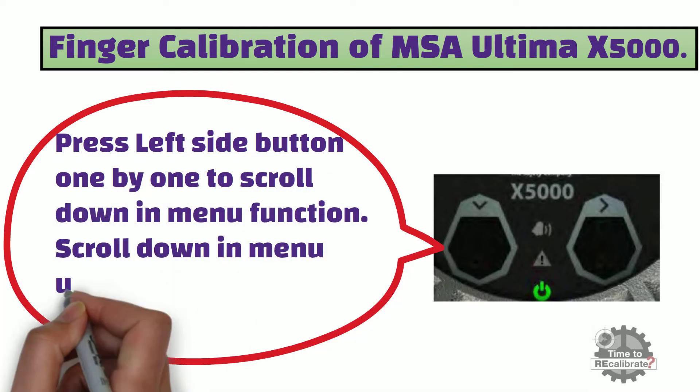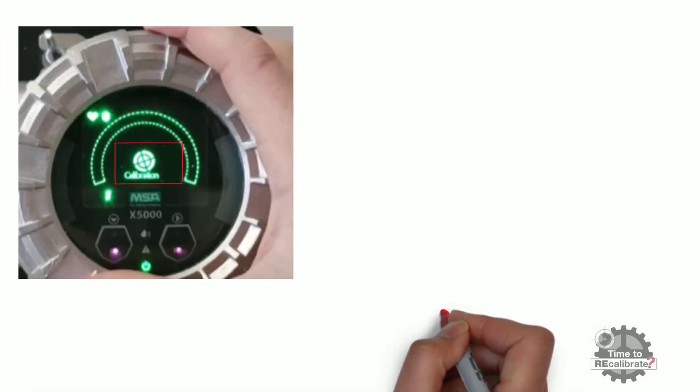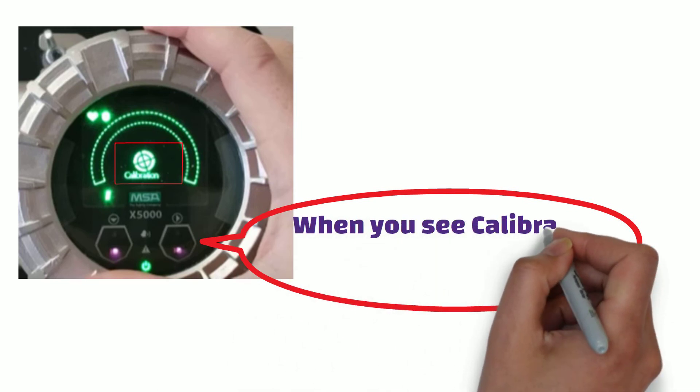Scroll down in the menu until you see the calibration option. When you see calibration option on the screen, press the right hand side or enter button.